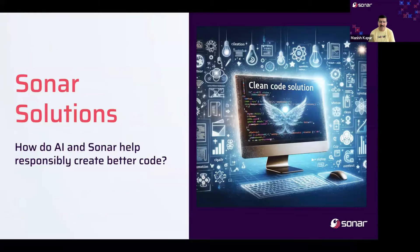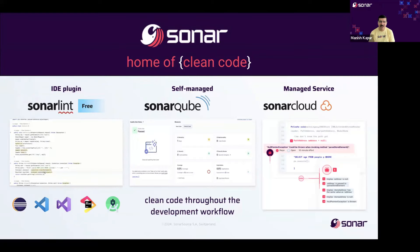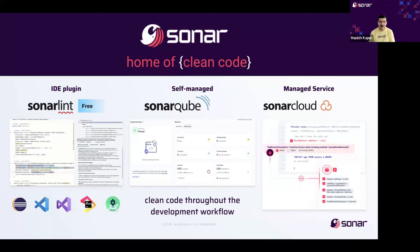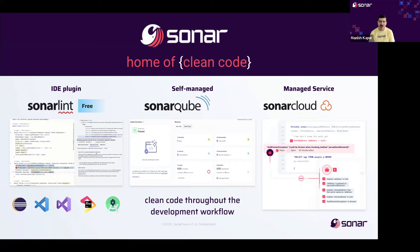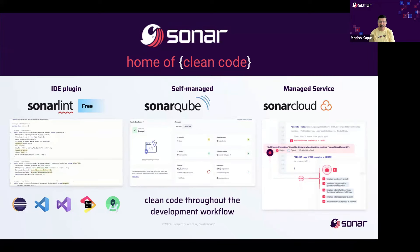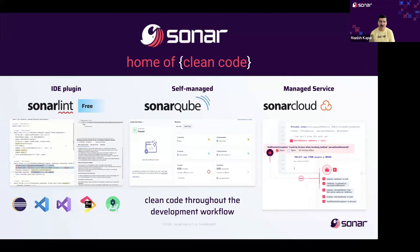Let's talk about Sonar solutions and how AI and Sonar can together help you responsibly create better code faster. Sonar is on a mission to equip developers to write clean code — code that is fit for production use. By using our products and methodology, organizations can minimize risk, reduce technical debt, and derive more value from their software in a predictable and sustainable way. We have three products to help you write clean code. SonarLint is a free IDE-based plugin that helps developers by detecting and highlighting issues in their code in real time. Like a spell checker, SonarLint detects bugs, code smells, and security vulnerabilities as the code is written and offers you guidance to fix those issues.